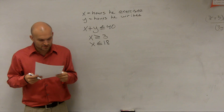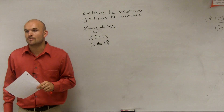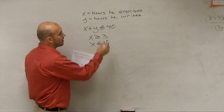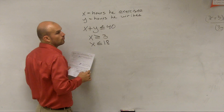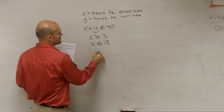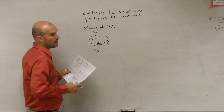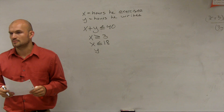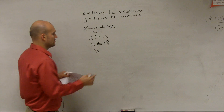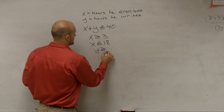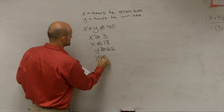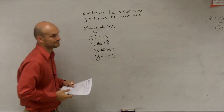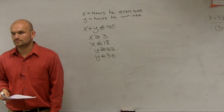He hopes to write between 22 and 30 hours. So y — the number of hours he writes — is going to be greater than or equal to 22, and y is going to be less than or equal to 30.